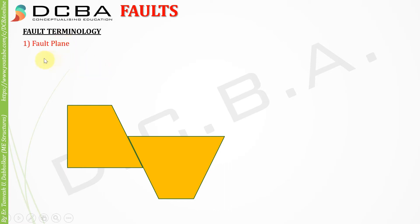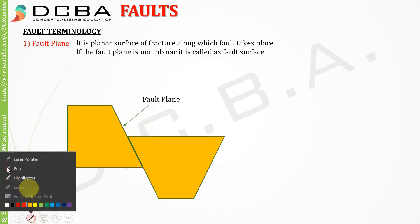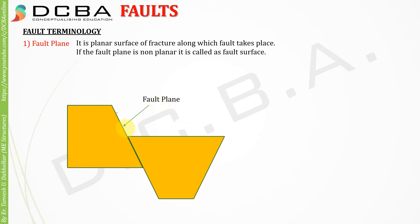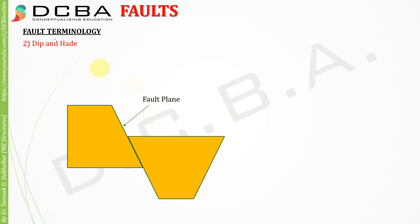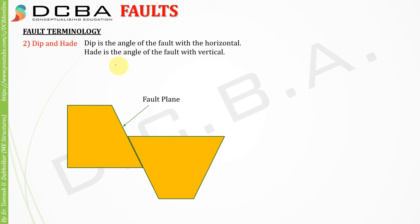Let us learn about the fault terminologies. First is the fault plane: it is a planar surface of fracture along which the fault takes place. If the fault plane is non-planar, it is called a fault surface. Next are dip and head: dip is the angle of the fault with the horizontal, and head is the angle of the fault with the vertical.